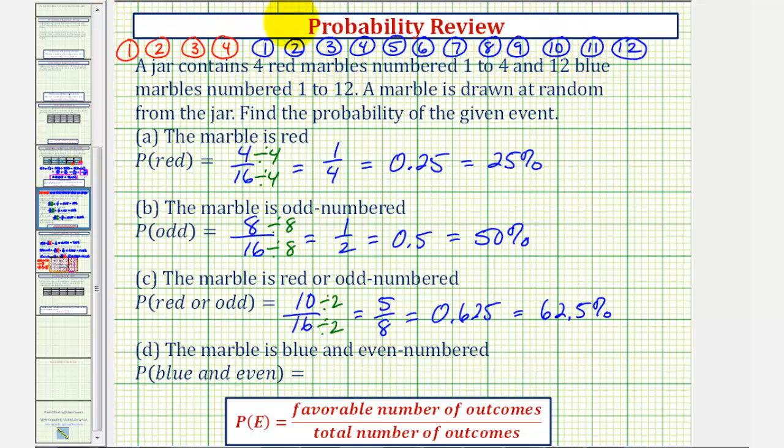And notice how six of them are even: two, four, six, eight, ten, and twelve, which gives us six favorable outcomes.